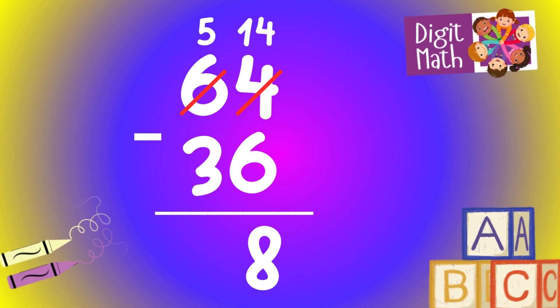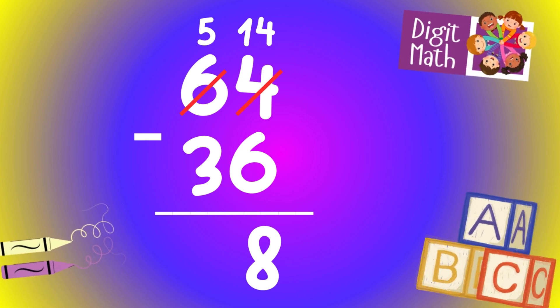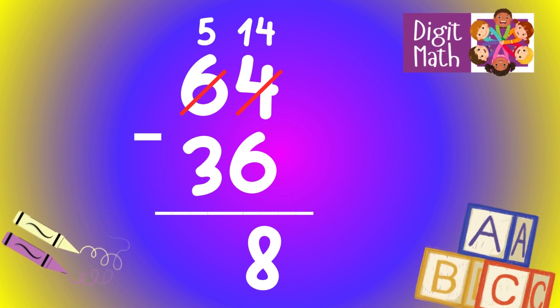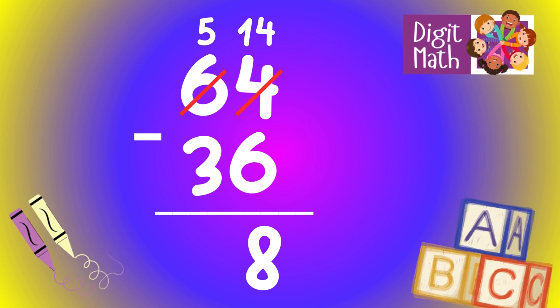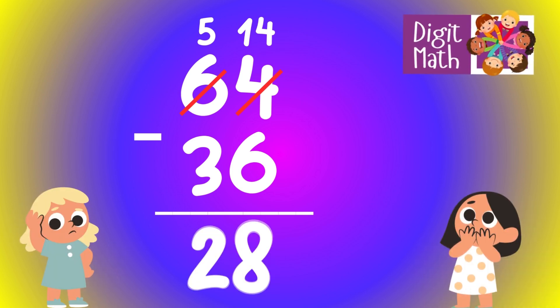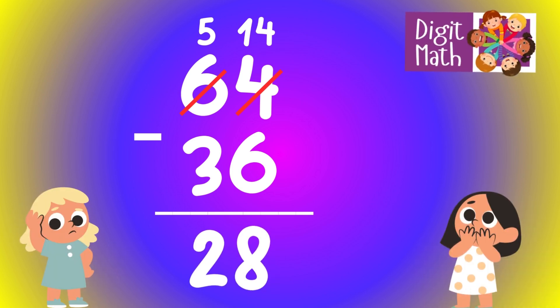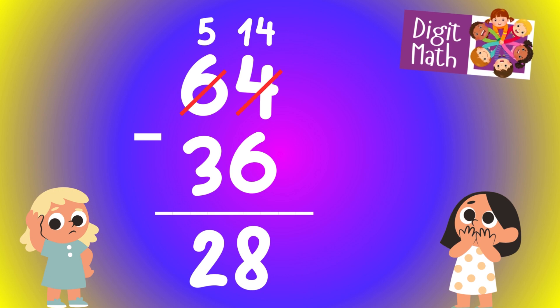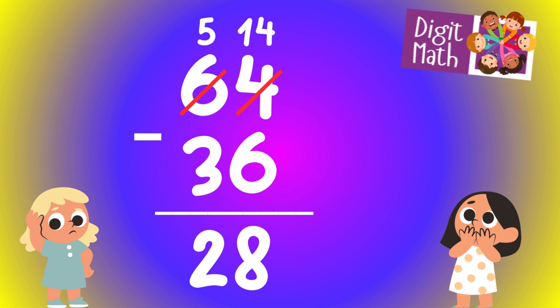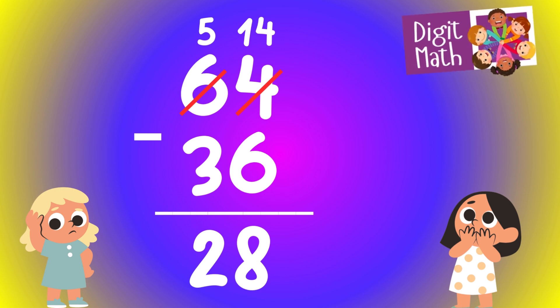In the tens column, we now have 5. Subtract 3 from 5, which equals 2. So the final result is 64 minus 36 equals 28.